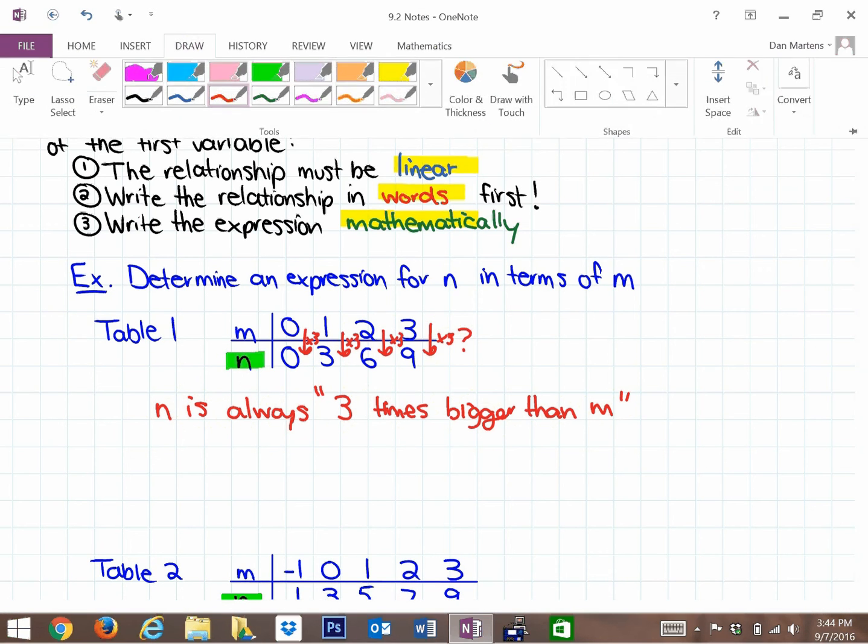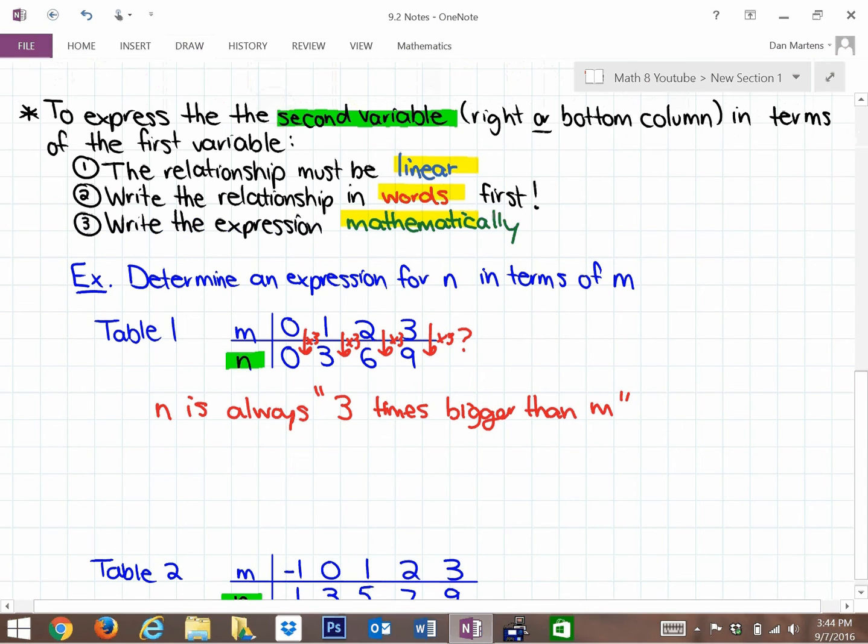Finally, we actually have to write this mathematically. And the way to write this mathematically is n is always, which means equals, and the way to write 3 times bigger than m is just like this, 3m. In mathematics, we don't write the timesing sign. If we have a number directly beside a variable, this means multiplication. So n is equal to 3 times m. That's the relationship there.